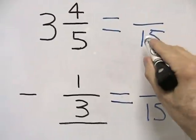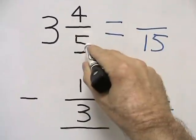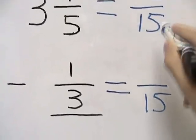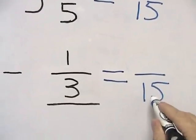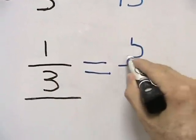So we start with our top fraction. We take our 15, divide it by 5 to get 3, multiply it by 4 to get 12. Next, we take 15, divide it by 3 to get 5, multiply it by 1 to get 5.